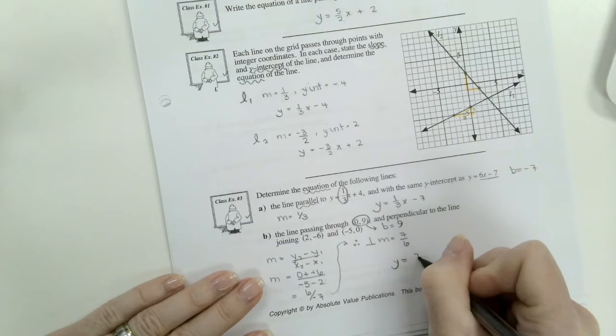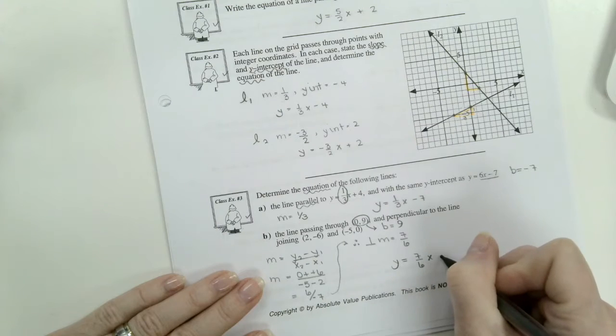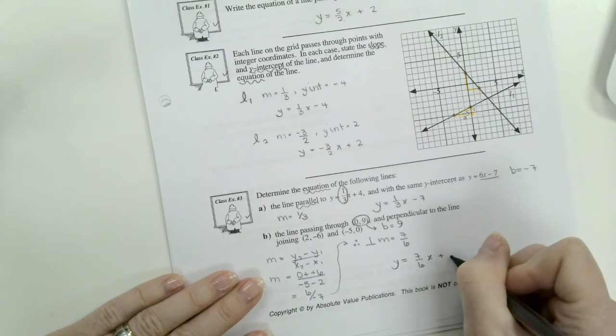And now we can write the equation. Y equals, we're thinking m, which is 7 over 6, x, plus b, which is 9.